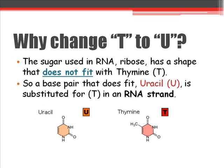A question I get asked a lot is: why do you have to change T to U when you're using RNA? Well, the sugar used in RNA — that ribose we talked about — it's got a shape that doesn't fit with thymine. The two puzzle pieces just don't fit together. So you have to use a base pair that does fit. Uracil, we just call it U, is substituted for thymine in an RNA strand because it fits.